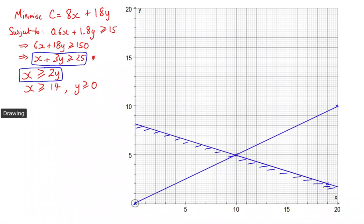Unfortunately, 0, 0 is on the line, so I can't use that one. If I used 0, 1, the x value is 0. Is that greater than or equal to 2 lots of 1? Well, no. So 0, 1 is not in the region that I want. So I need to shade the top region for this one.